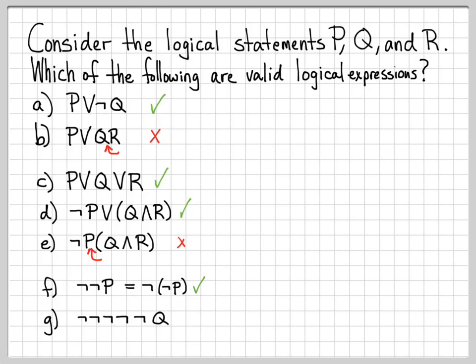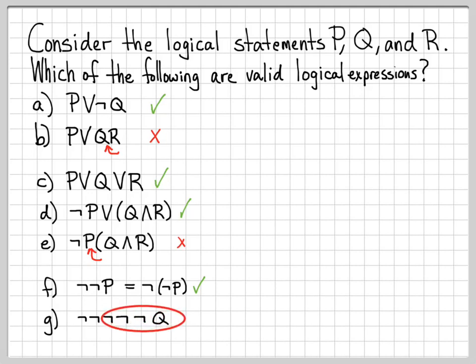What multiple nots really do is just flip-flop the statement back and forth. For instance, if Q is 'it is raining today,' then not Q is 'it is not raining today,' not not Q is back to 'it is raining today,' and not not not Q is 'it is not raining today.' It just keeps toggling the logical expression from true to false or false to true over and over again. So doing that is okay.